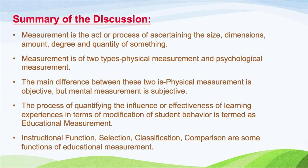As a whole, we have discussed the concept of measurement — the act or process of ascertaining the size, dimension, amount, degree, and quantity of something. Measurement is of two types: physical and mental or psychological. The main difference is that physical measurement is objective and mental measurement is subjective. Educational measurement is the process of quantifying the influence or effectiveness of learning experience in terms of modification of student behavior. Its functions include selection, classification, comparison, and so on. I hope you have understood the concept of measurement, types of measurement, educational measurement, and its various nature and functions. In the next part, we will discuss scales of measurement.